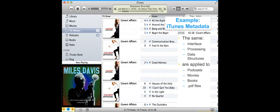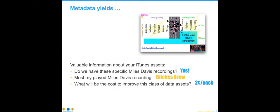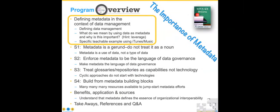They eventually decided this was complex and broke it back apart again. The nice part was that it worked really well for about 10 years, and the economies of scale when you build something like this are critically enormous. Metadata yields valuable information about your assets: Do we have these specific Miles Davis recordings? What is my most played Miles Davis recording? What will it cost to improve this class of data assets? Could I listen to the entire album before dinner? Not easily in this case because it's a live recording almost two hours long.